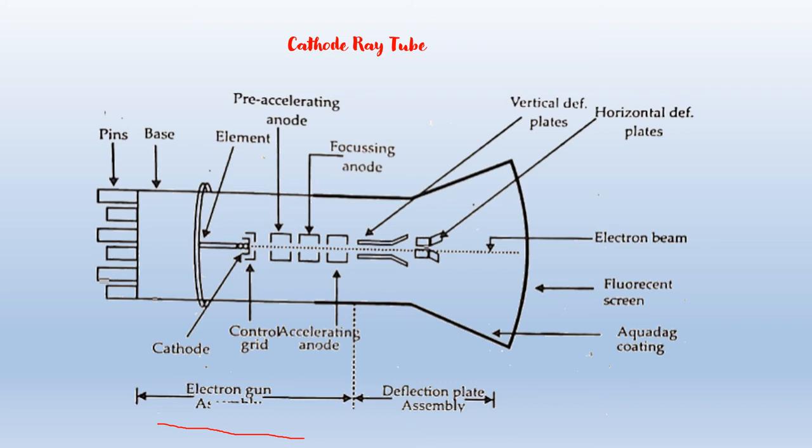The next assembly is the Deflection Plate Assembly. If voltages are applied to the deflection plates — these two pairs of deflection plates — the electron beam can be deflected in the horizontal direction by the horizontal deflection plates, or in the vertical direction by the vertical deflection plates. Mostly electrostatic deflection is used in CRT.